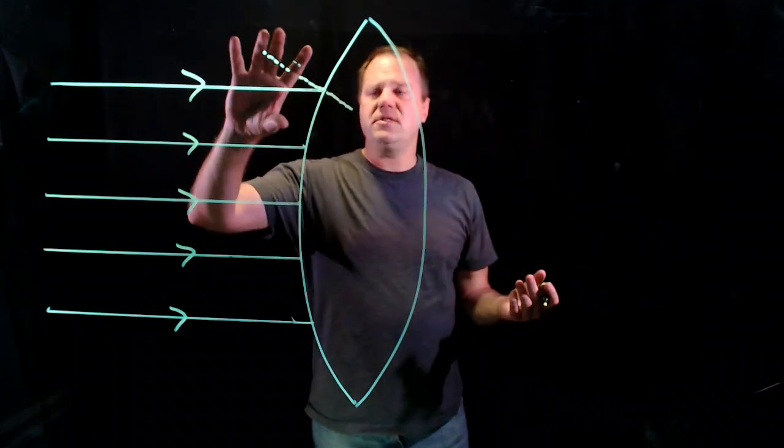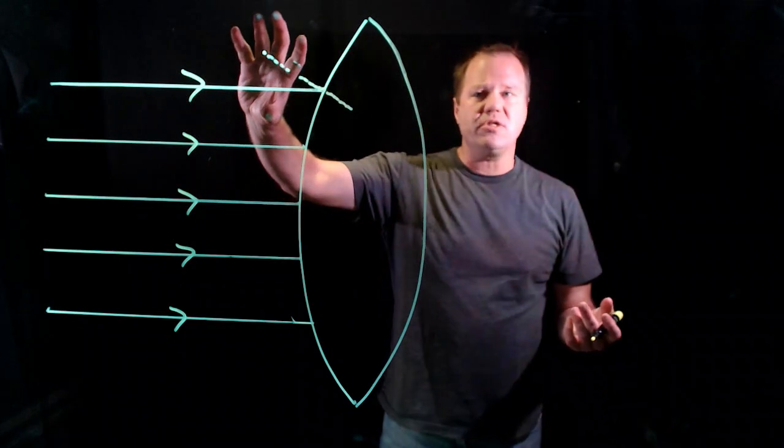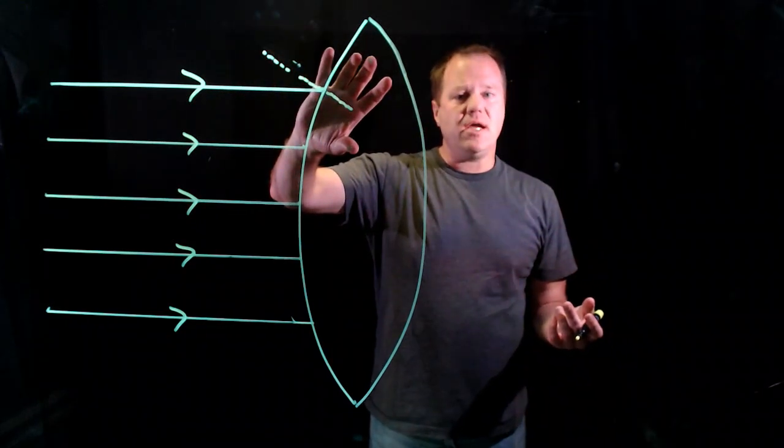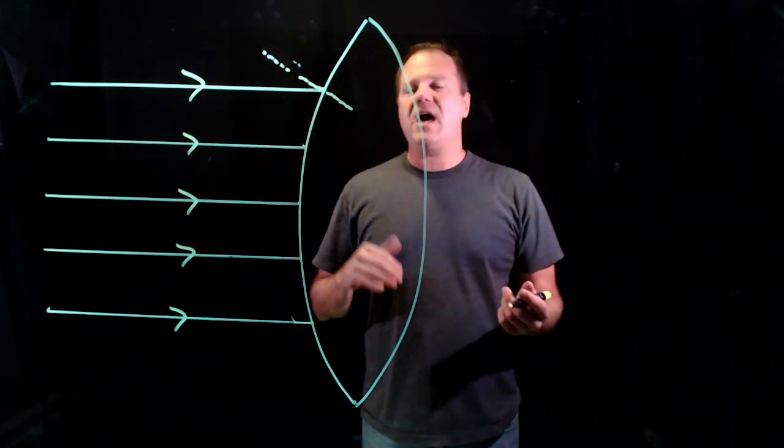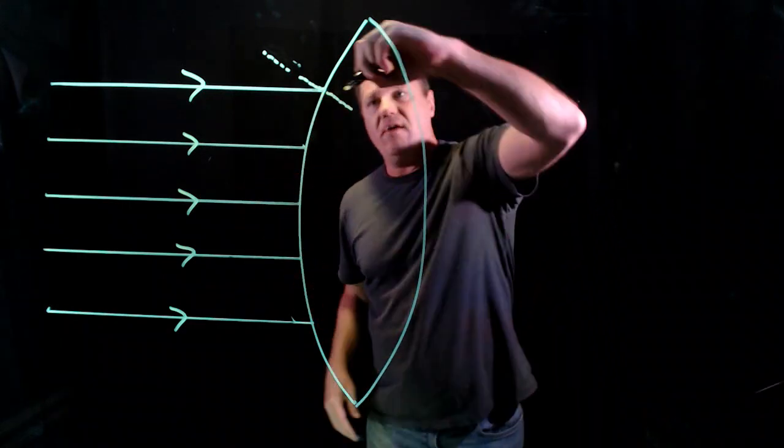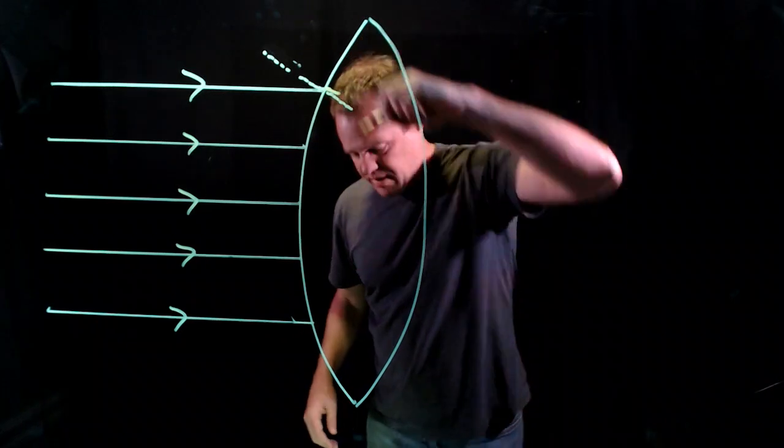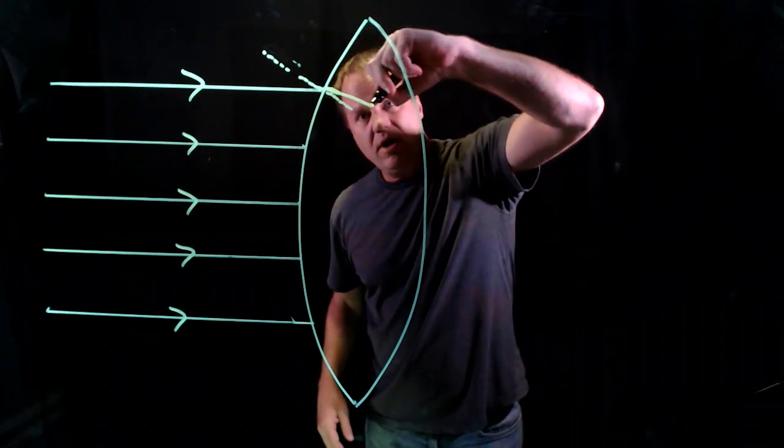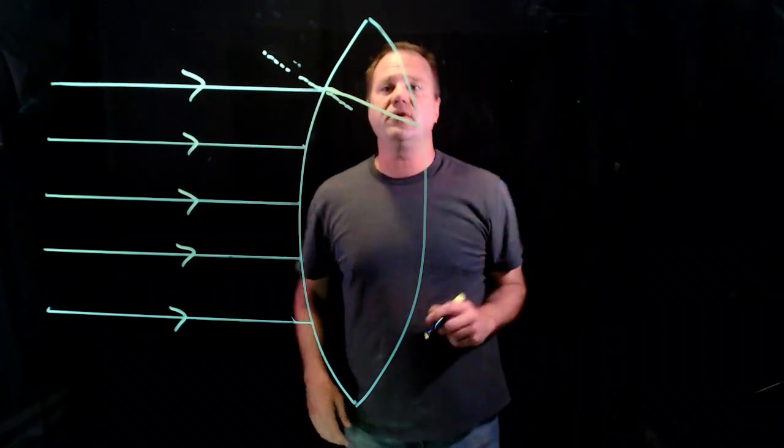And so because the index of refraction outside is smaller than it is inside, we're going to have a bend towards the dotted line that I've drawn. So it will bend down just a little bit and then it will hit the lens on the other side.